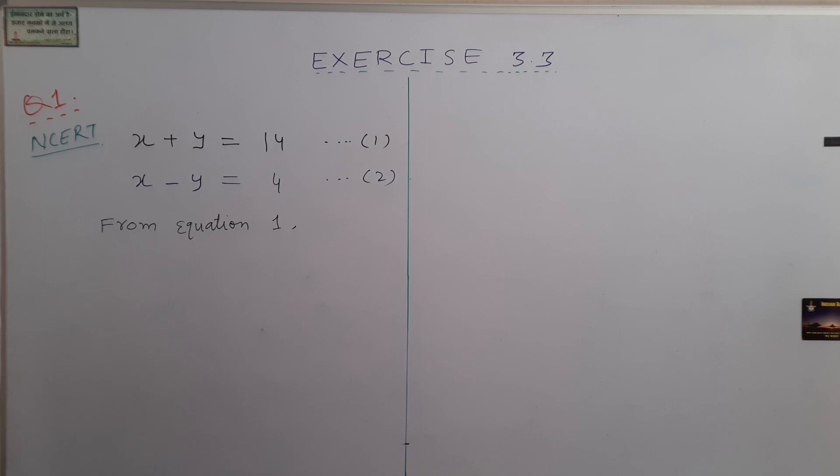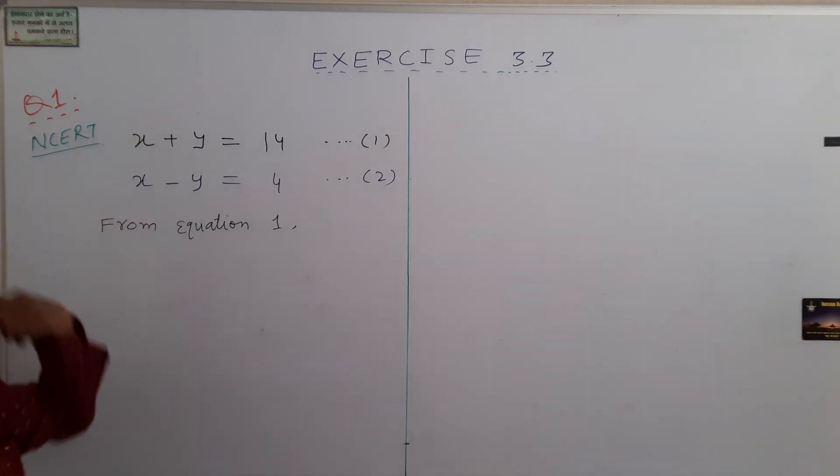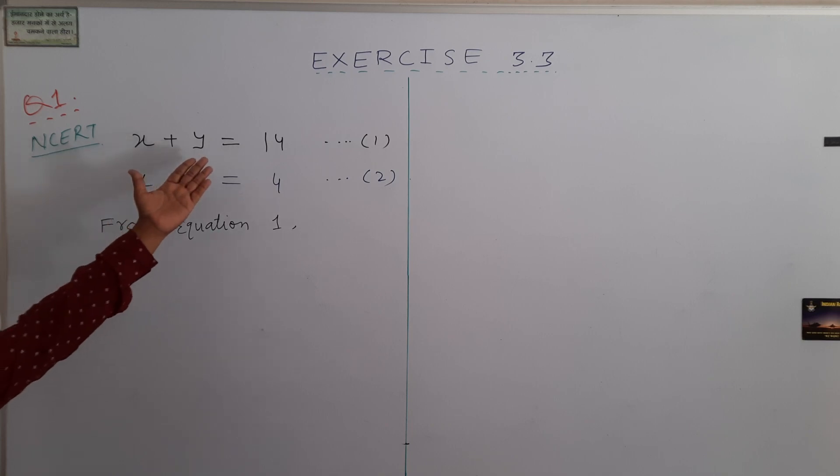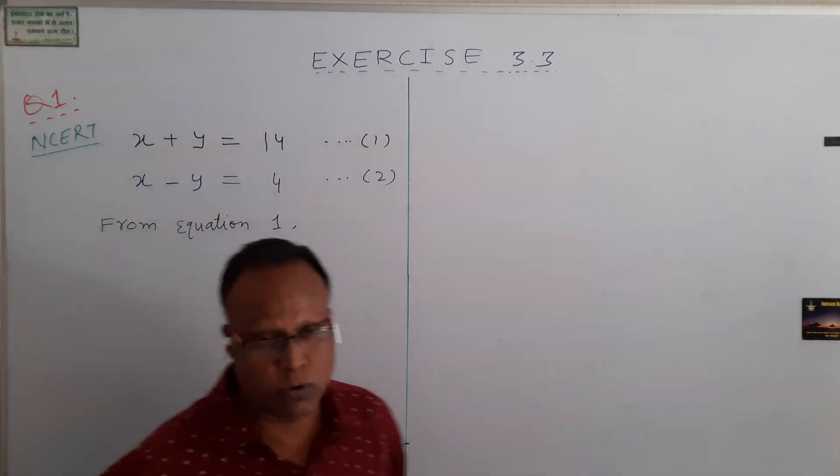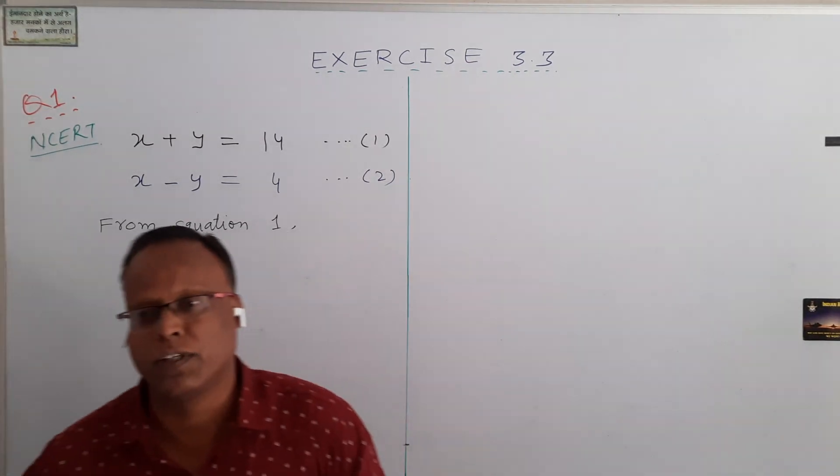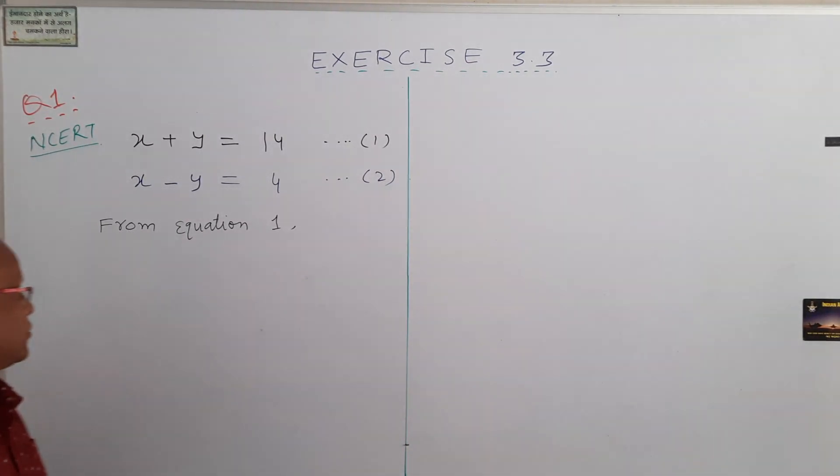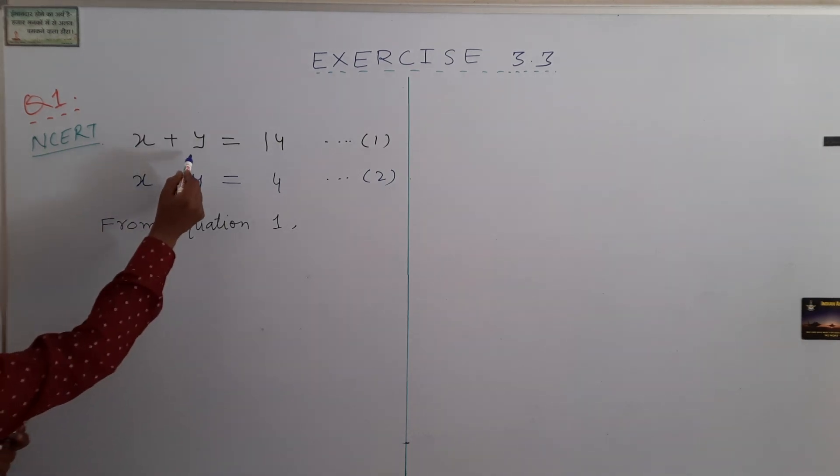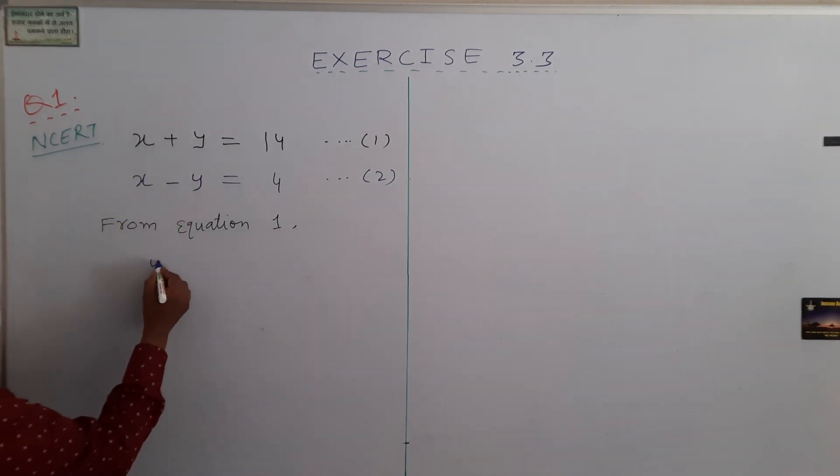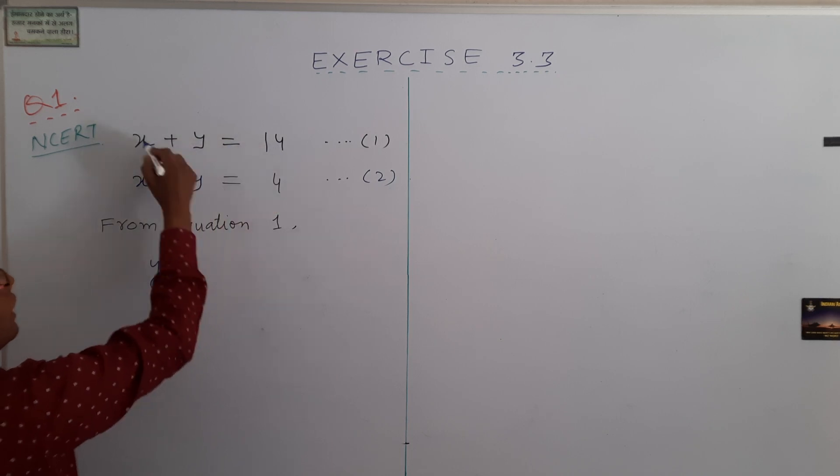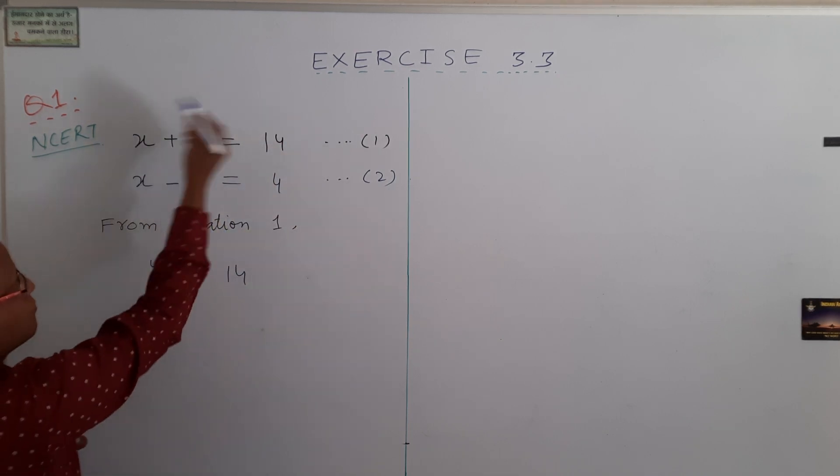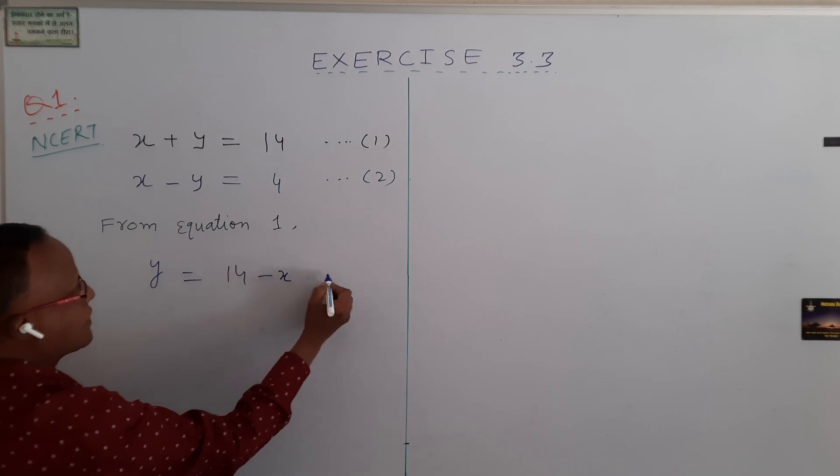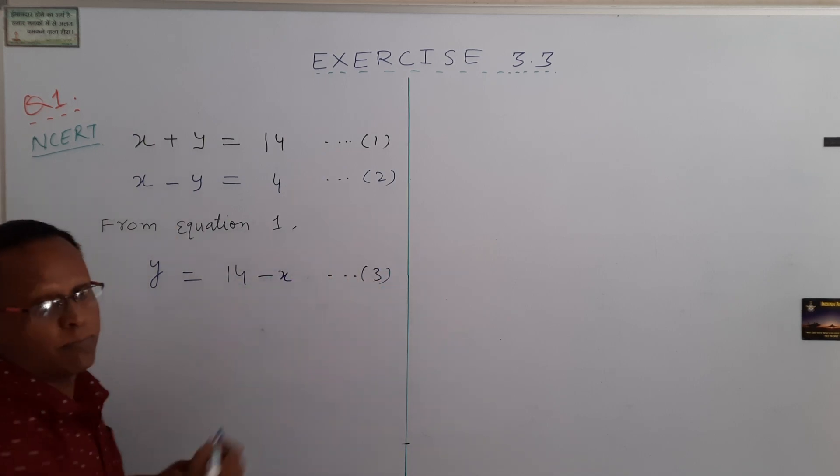The equation 1 can be written as, from equation 1, you have to find out the value of y or x from equation 1 and substitute in equation number 2. Then you will get the value of the another variable. So from equation 1, we have found out the value of y. So y equal to 14 minus x, taking x from left side to right side. This is your equation number 3.